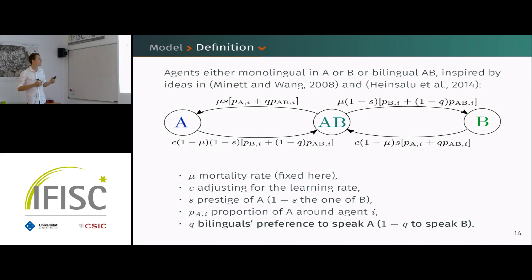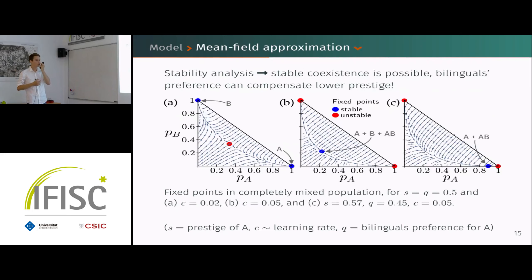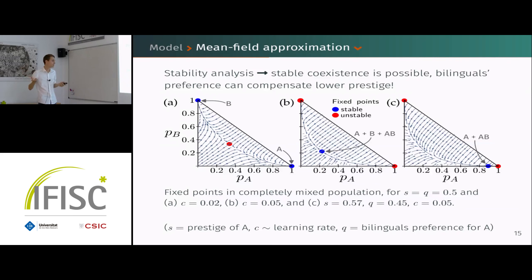To understand if this model reproduces what we wanted, we start with a stability analysis in mean field of the equations obtained, which gives us three kinds of convergence outcomes. I show the p_A, p_B state-space and where the model converges to — blue indicates stable points.